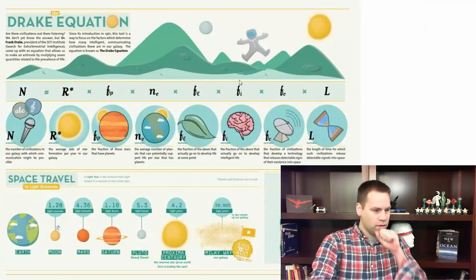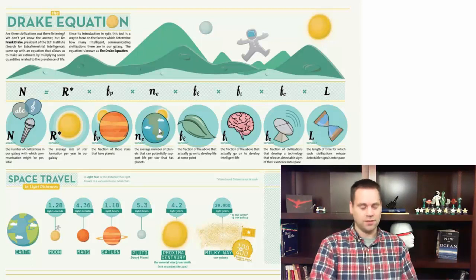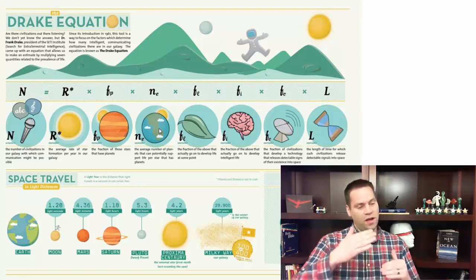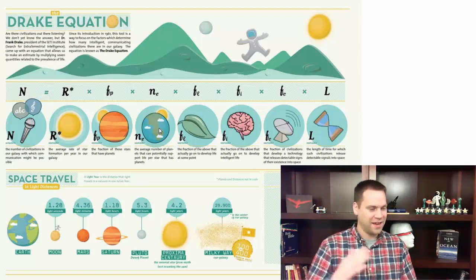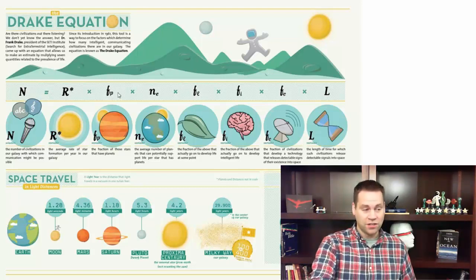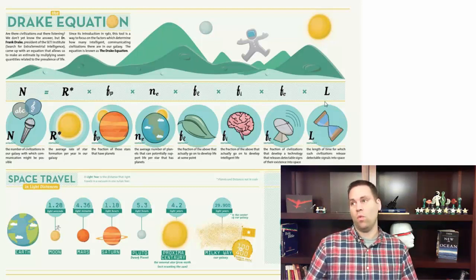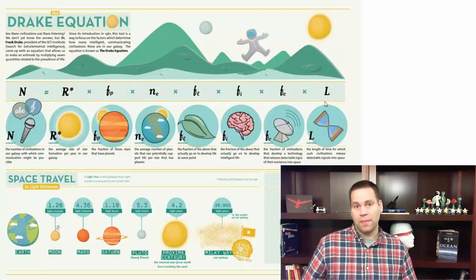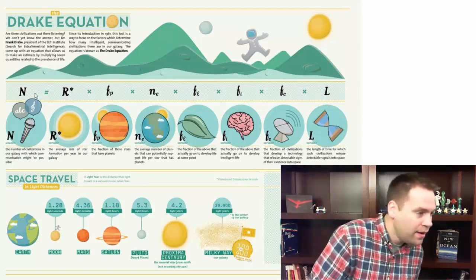So how does this equation work? Essentially, what you do is take a whole bunch of fractions and multiply them all together to get what's left. For example, if only one out of every ten stars has a planet around it, you would put one-tenth and multiply that through.